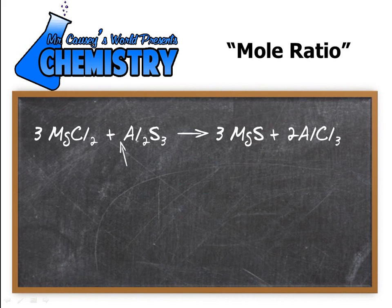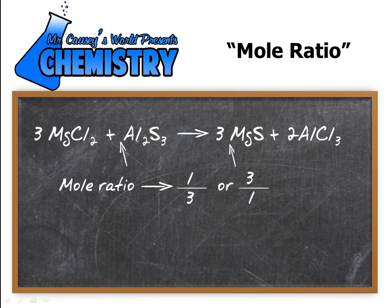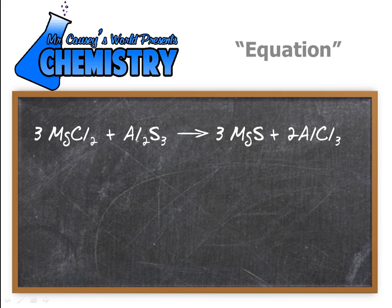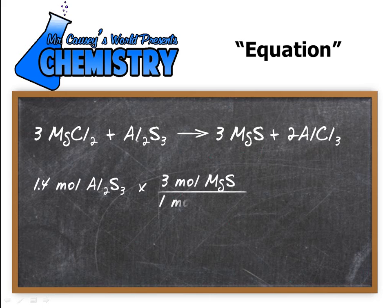And we have 1 to 3 and the mole ratio is going to be 1 to 3 or 3 to 1. Okay and it depends on what we want to cancel out. Let's do the equation. The equation we're going to have 1.4 moles of aluminum sulfide and we'll multiply it by 3 over 1 because we want aluminum sulfide to cancel out. Now if I wanted magnesium sulfide to cancel out I would just flip it over and that equals 4.12 moles of magnesium sulfide.